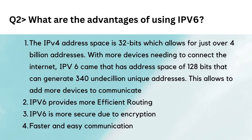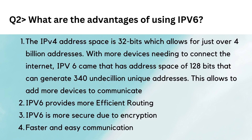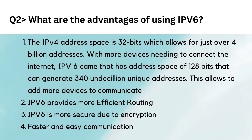Question two: what are the advantages of using IPv6? The IPv4 address space is 32 bits, which allows for just over 4 billion addresses. With more devices needing to connect to the internet, IPv6 scales with an address space of 128 bits that can generate 340 undecillion unique addresses, allowing many more devices to communicate. Another advantage is that IPv6 provides more efficient routing. IPv6 is also more secure due to encryption and authentication, and it is faster and easier to communicate with.